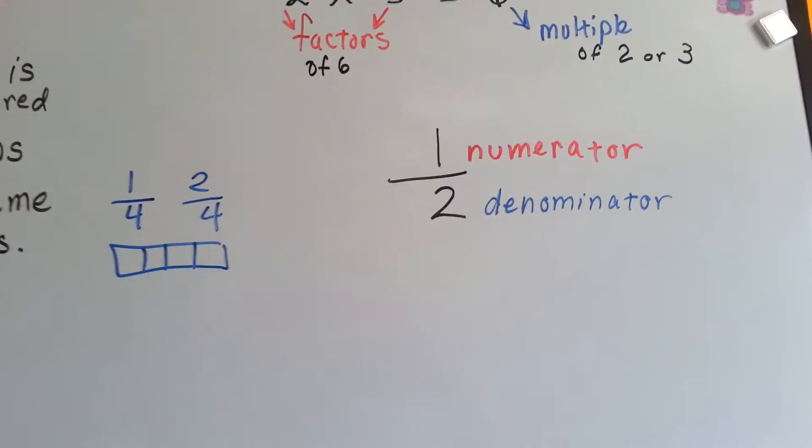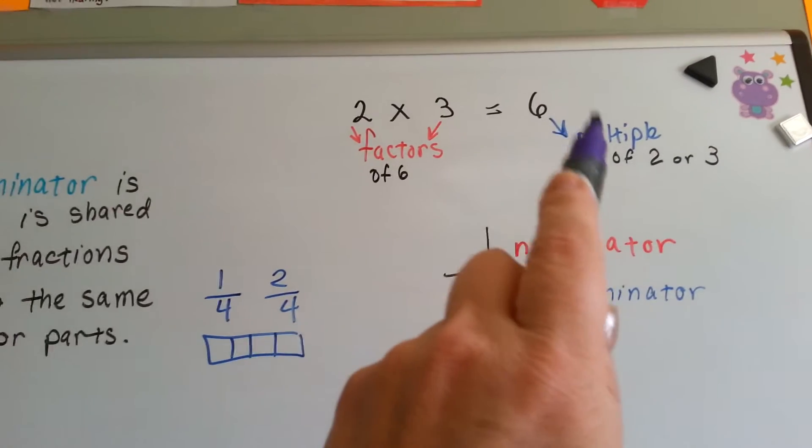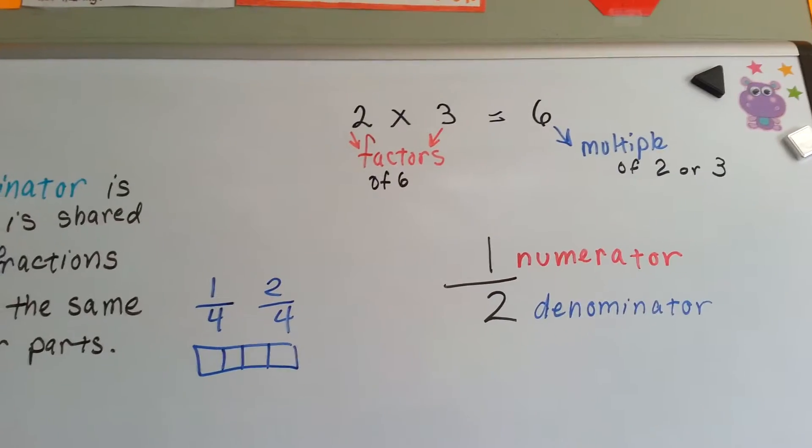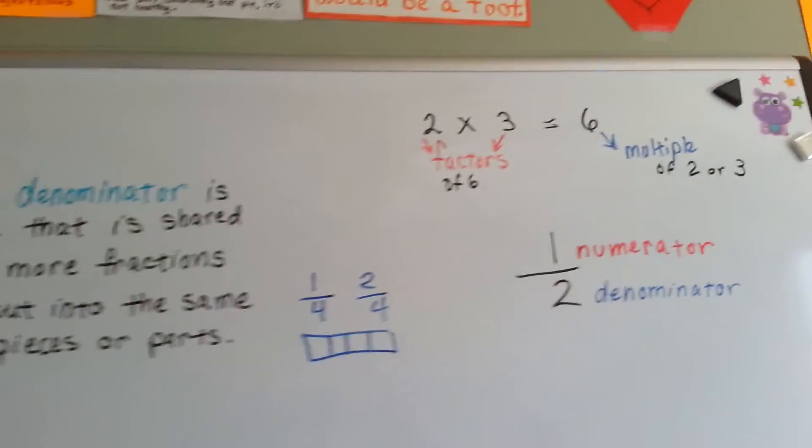Remember that the numerator is on top and the denominator is on the bottom, and that a multiple is like an answer in a multiplication problem. Multiple sixes would be 6, 12, 18. There's a multiple number of sixes.